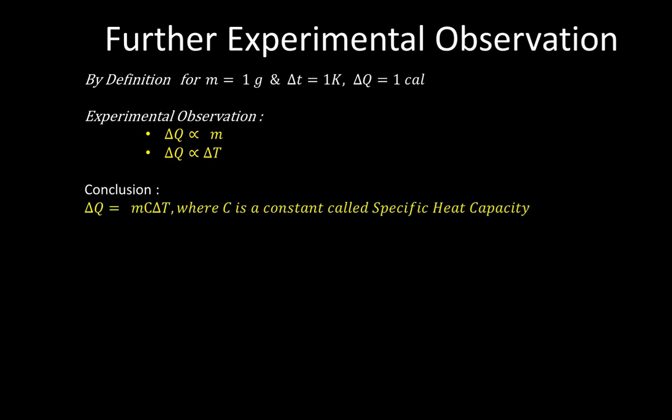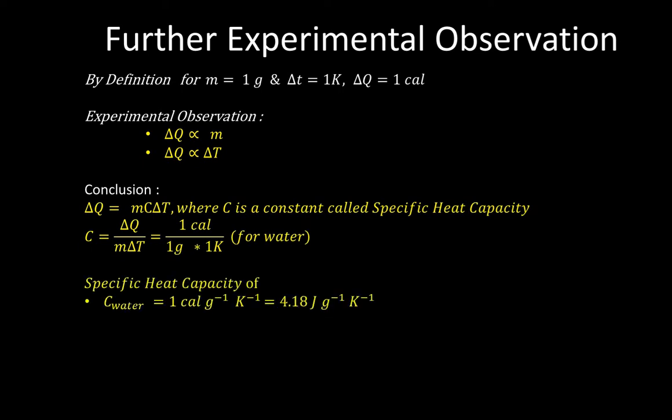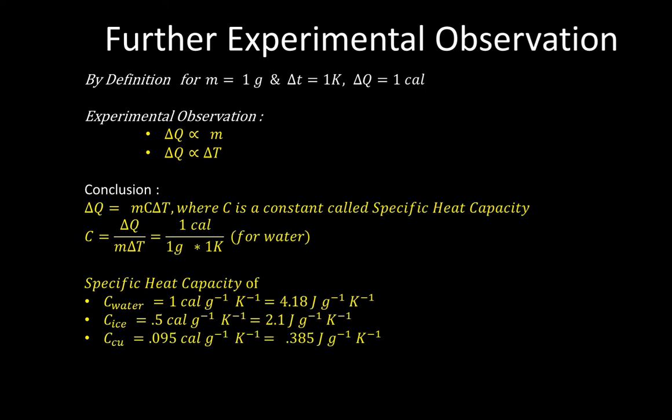In conclusion, we can write delta Q = MCdeltaT. The specific heat capacity of water is 1 calorie per gram per Kelvin, which can also be written as 4.18 joules per gram per Kelvin. The specific heat capacity for ice is 0.5 calorie per gram per Kelvin, or approximately 2.1 joules per gram per Kelvin. For copper, it is 0.385 joules per gram per Kelvin.